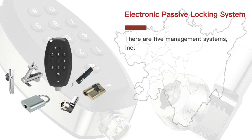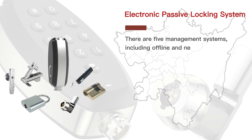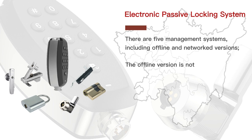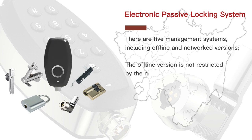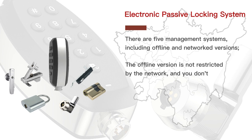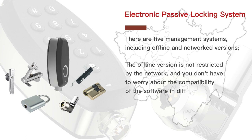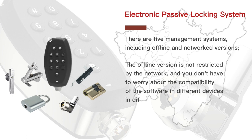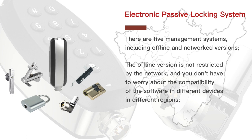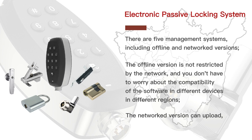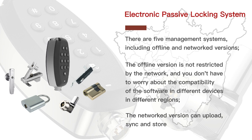There are five management systems including offline and networked versions. The offline version is not restricted by the network and you don't have to worry about software compatibility across different devices or regions. The networked version can upload, sync, and store data in real time.